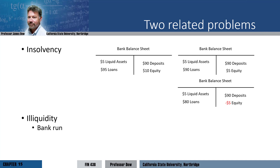Bank runs can happen even with a healthy bank. Say that I think the bank is solvent — it has more assets than liabilities — and I also think that no one is going to take their money out of the bank. Then I'm fine with leaving my money in the bank. However, if I think a bunch of other depositors are going to pull their money out, then I'm concerned. If they pull out their money and I don't, then maybe the bank will become illiquid and fail, and so I won't get all my money back. Because of this, I'll rush to the bank so that I'll be first in line. If everybody does this, we have a bank run, which itself might cause the bank to fail, even if it's solvent. It's the expectations of a bank run that causes the bank run.